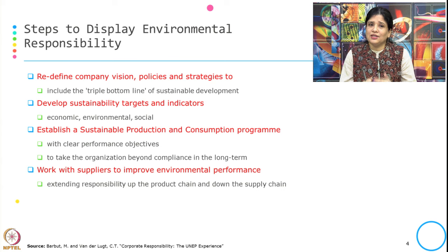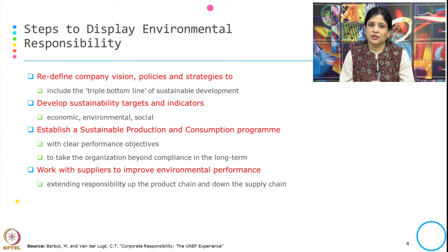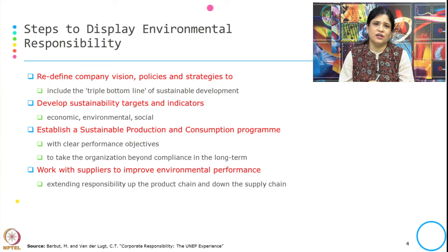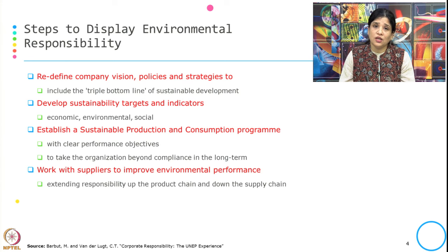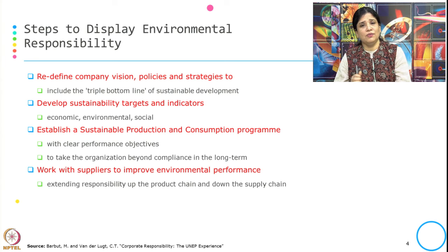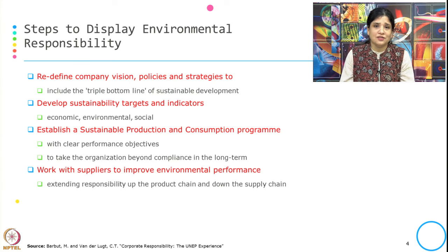The second step is to develop sustainability targets and indicators. These targets should be in the domain of economic sustainability, environmental sustainability, and social sustainability. Once they decide the targets, they work on indicators to achieve them. Then, establish a sustainable production and consumption program with clear performance objectives — both for sustainable consumption and sustainable production. This also helps them achieve compliance in the long term when environmental responsibility becomes mandatory beyond the boundary of the firm.